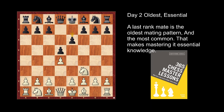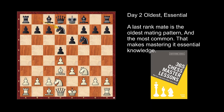White plays e3 — it's a kind of symmetric setup. Then Bd3 and a knight jump. After the knight jump and Bd6, the position is symmetric again.